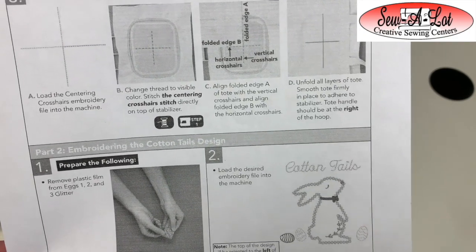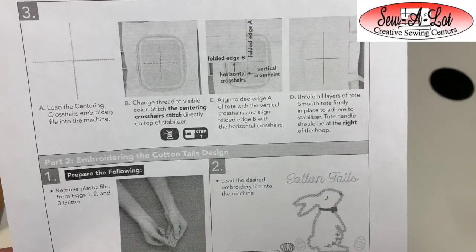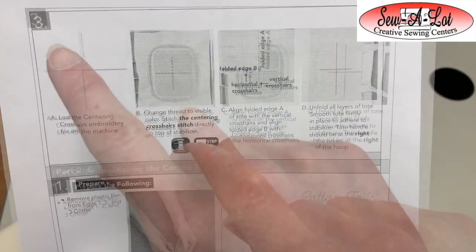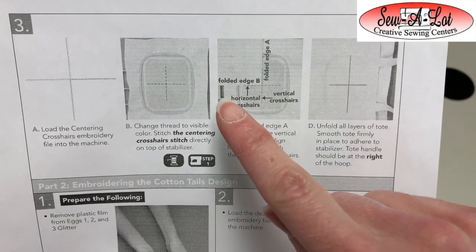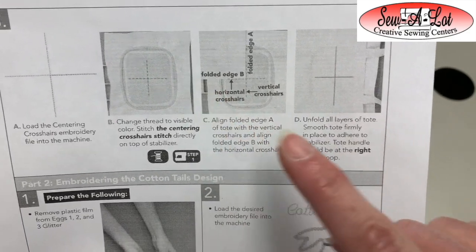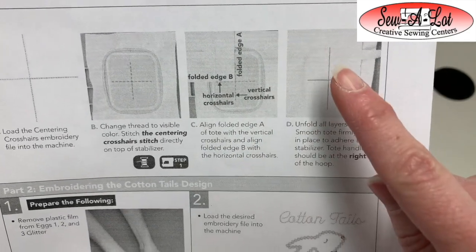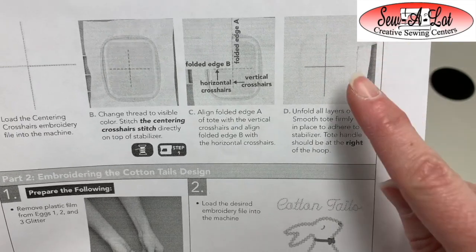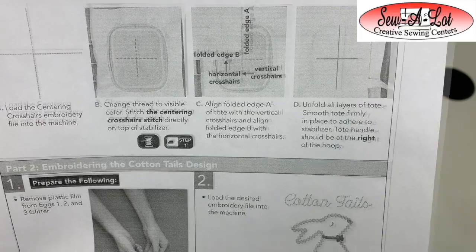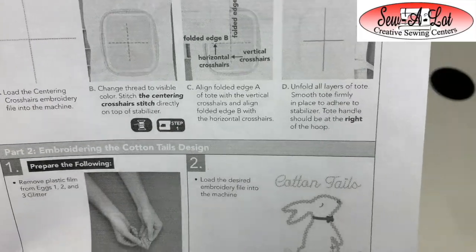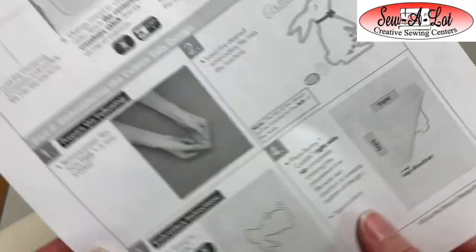If you notice on step three when we're laying the bag on, you can see this is where the hoop attaches here in the picture. It's still laying that same direction and the handle of the bag is off to the right - the short side and the handle are off to the right. When you look at your machine, your design should be pulled up so that it's facing this direction.